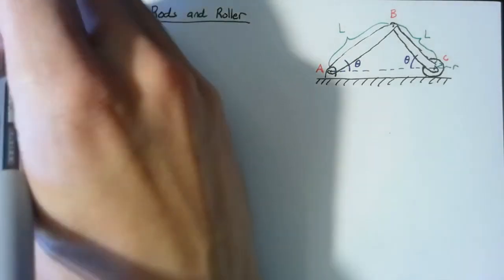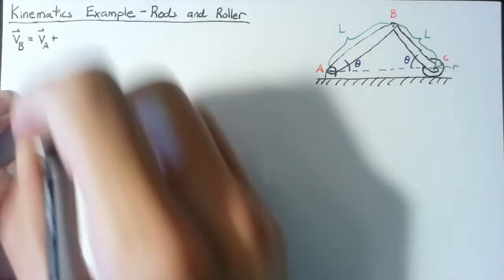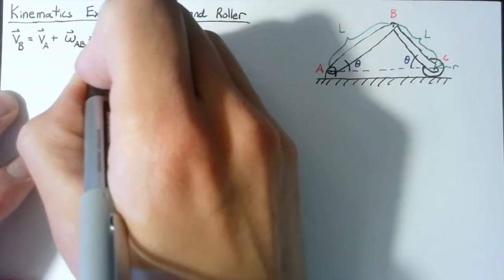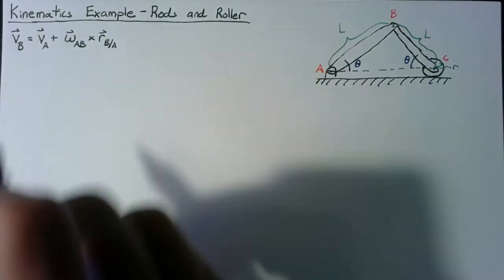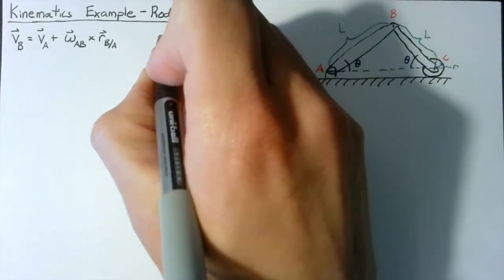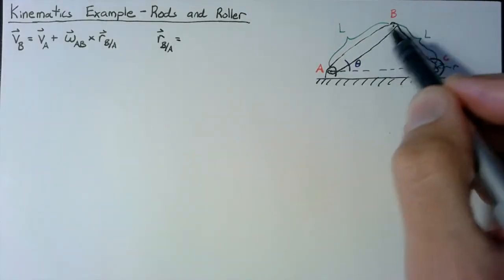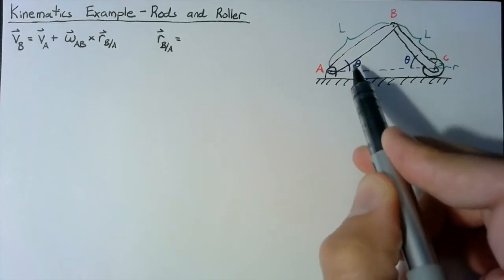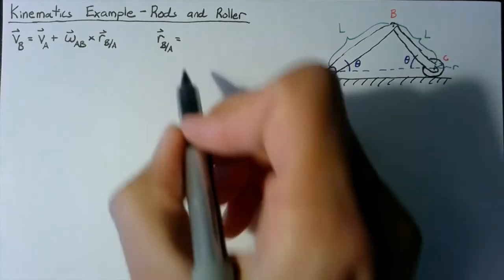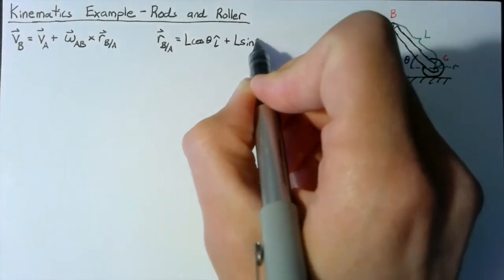Let's write the kinematic equation for the velocity of B. We say VB equals VA plus the velocity of B with respect to A, which equals omega_AB crossed with the position of B with respect to A. The position vector is L in the direction defined by theta, giving us L cosine(theta) in the i direction plus L sine(theta) in the j direction.